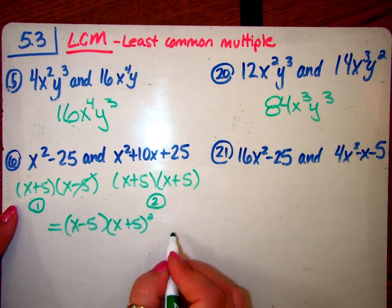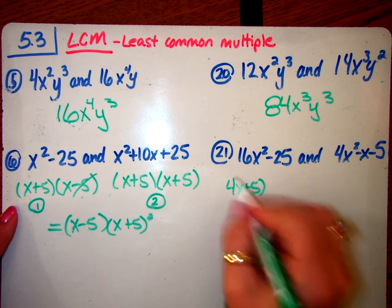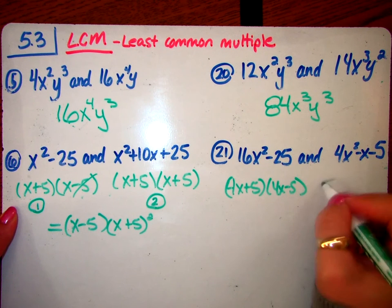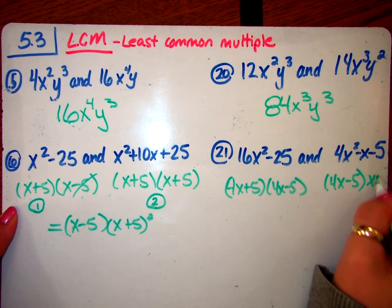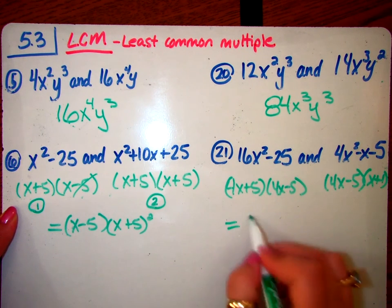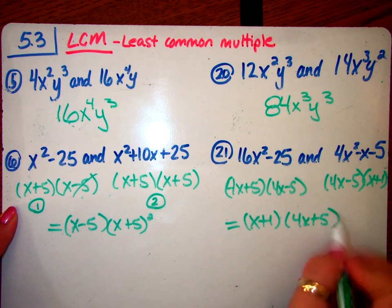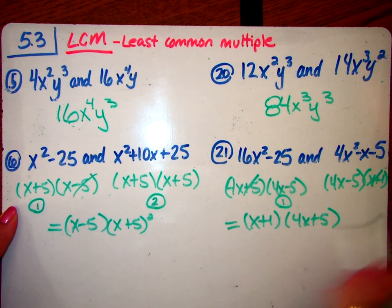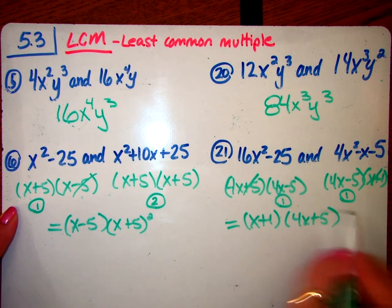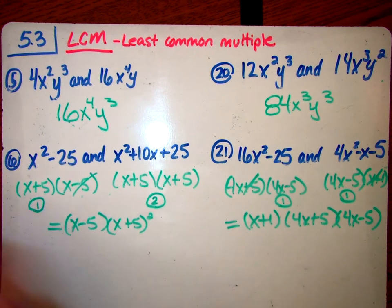Over here, this is a difference of squares, so it's 4x plus 5, 4x minus 5. And this one is 4x minus 5, and x plus 1. So this one, x plus 1 happened, and then 4x plus 5 happened. So those are gone. Now, it happened once here, 4x minus 5, and it happened once here. So what's the highest number? One time. So I'm only going to write it one time. So that's your least common multiple.